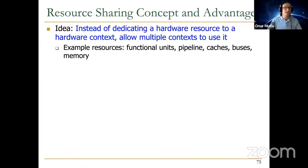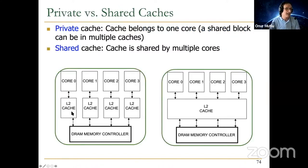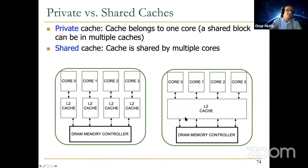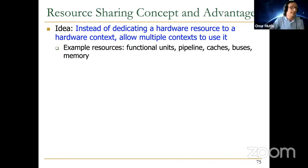Resource sharing is actually a bigger concept. Instead of dedicating a hardware resource to a hardware context, core, or thread, you allow multiple hardware contexts to use it. In this case, the resource happens to be the L2 cache — in one configuration we dedicate the L2 cache to one core, whereas in another we share it across multiple cores. Example resources can be many: functional units, pipeline, caches, buses, memory, SSDs — essentially anything in the system.